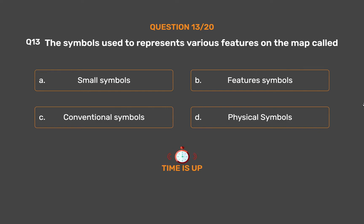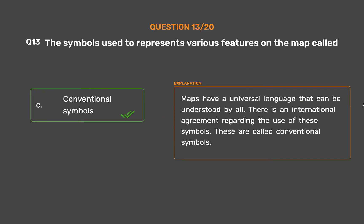The correct answer is Option C: Conventional symbols. Maps have a universal language that can be understood by all. There is an international agreement regarding the use of these symbols. These are called conventional symbols.